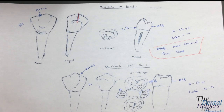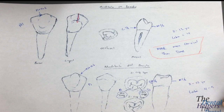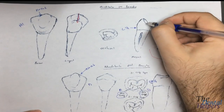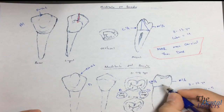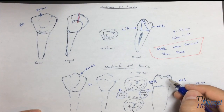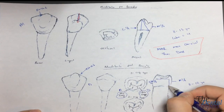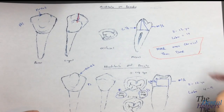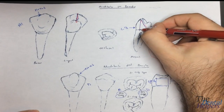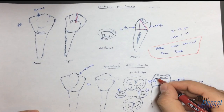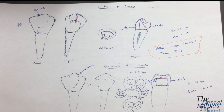In terms of crown shape from the proximal view, it's predominantly a trapezoid. But in the case of these two mandibular premolars, it's actually triangular for the first and squared for the second. So the mandibular first is triangular and the mandibular second from the proximal is squared in terms of crown shape.